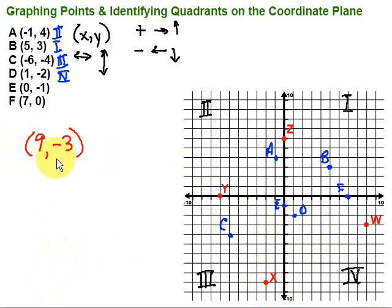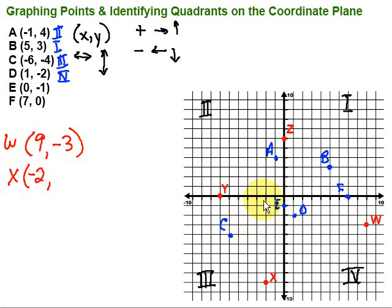Let's try point X. Starting at the origin, I go left or right first: 1, 2 to the left. Since left is negative, that's negative 2. Then to get down to X, I go down 1, 2, 3, 4, 5, 6, 7, 8, 9. Since I went down 9, that's negative 9. So point X is at negative 2, negative 9.